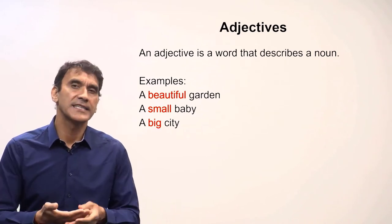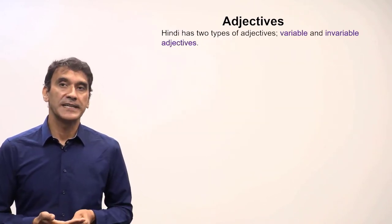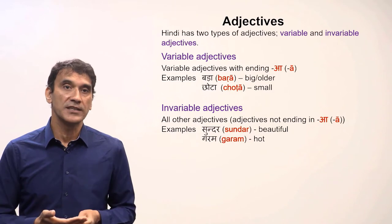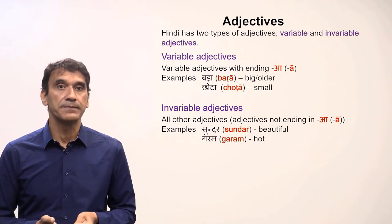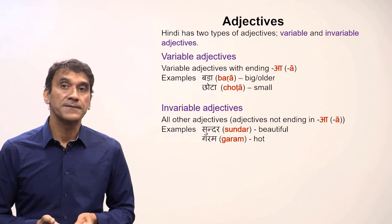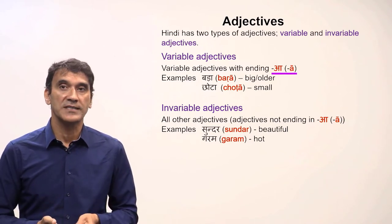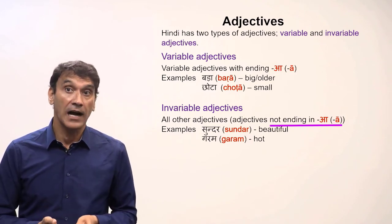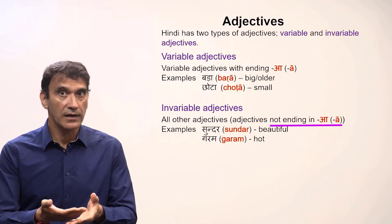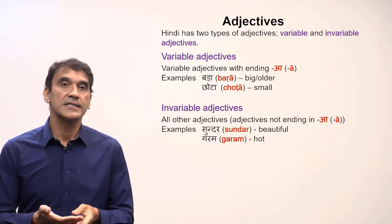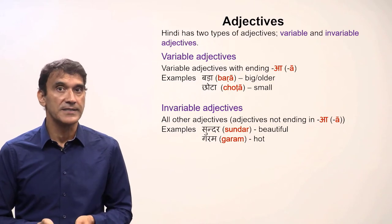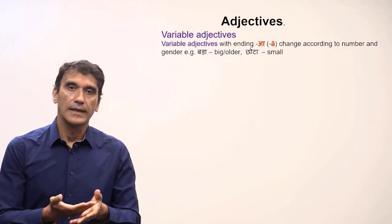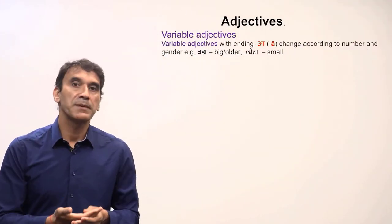Let's take adjectives in Hindi. There are two types of adjectives in Hindi: variable and invariable. The variable adjectives change according to number and gender, and the invariable adjectives stay the same. The variable adjectives have the ending -a for masculine nouns, such as 'bada' (big) and 'chota' (small). The invariable adjectives do not have the ending -a — for example, 'sundar' (beautiful) and 'garam' (hot).